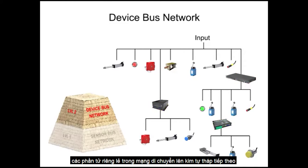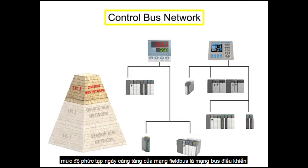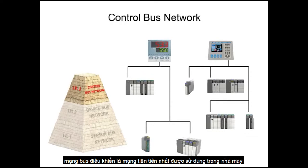Moving up the pyramid, the next increasingly complex level of fieldbus networking is the controlbus network. Controlbus networks are the most advanced networks used on the factory floor, and data communication happens at a high level.